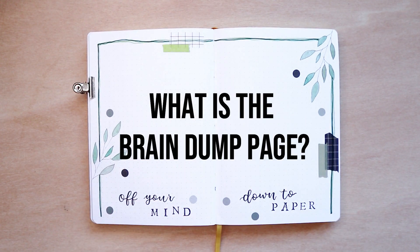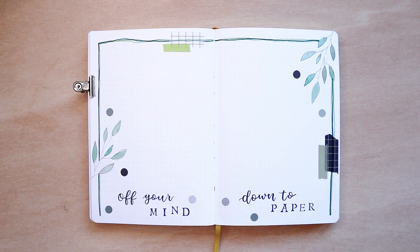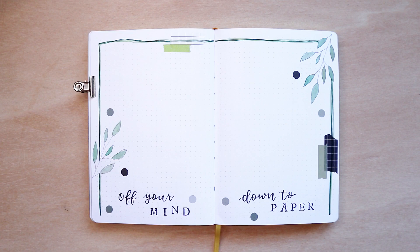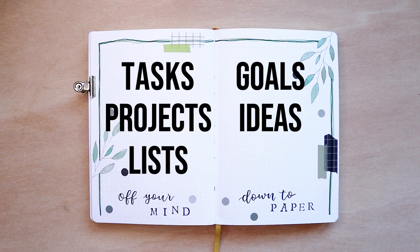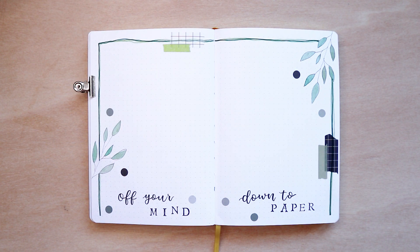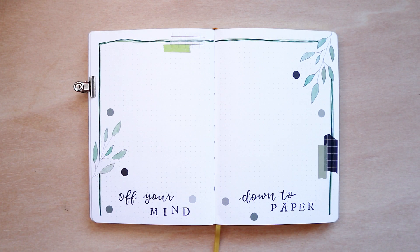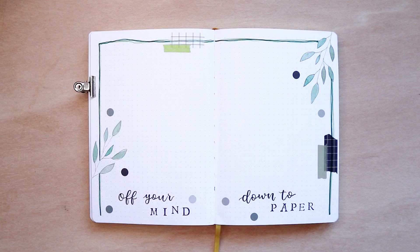So first things first, what is the brain dump page? This is my brain dump page for the month of April, and basically it is the place where you can write everything that is on your mind. You can write here your monthly tasks, monthly goals, projects that you want to work on, ideas that you have, things you want to try, things you want to buy. You can do a wish list, a shopping list, and so on. You can even add post-its and cards. Whatever you need, you can add on this page. Instead of having random things bothering you in your mind, you write them down so you know that you have to do them, but you are not stressing over them and thinking about them all the time. It has the purpose of keeping your mind clear and focused.